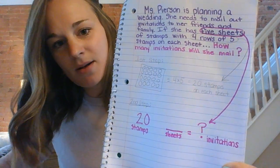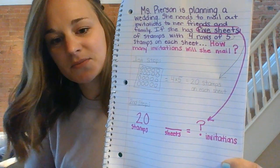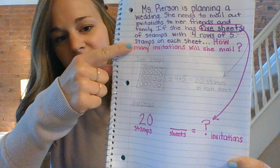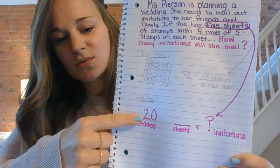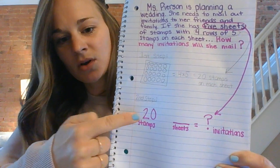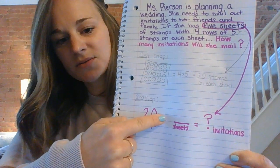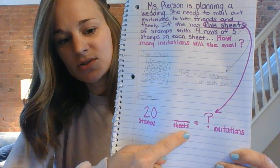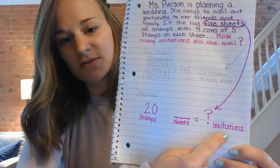The story problem tells me that I have five sheets. You'll need to find how many invitations. So if I have 20 stamps on each sheet, figure out what operation you could use and how many sheets there are from the story problem to answer the final question.